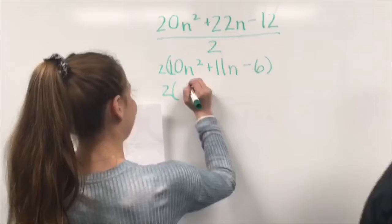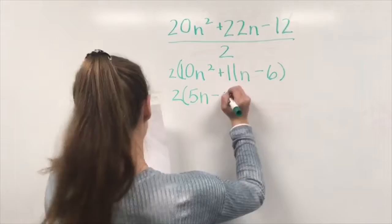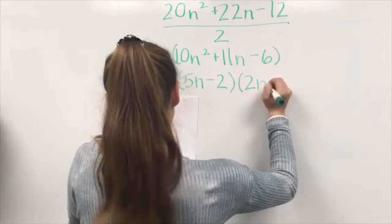Then you factor, and you get 2 times 5n minus 2 times 2n plus 3.